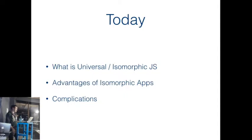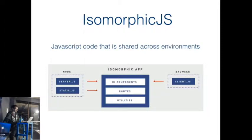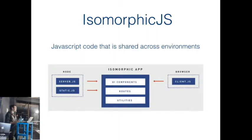I want to cover why it's relevant, some of the advantages and complications we ran into while developing isomorphic apps. I'm going to focus more on theory and things we ran into while trying to build them. So what is isomorphic or universal JS? It sounds complicated but it's not. It's just an app where you share the JS between the client and the server, or parts of the app run on both. It's not limited to just the view layer - it could be anything. We've used stuff like PouchDB where you get a single API for database access, or model validation on both sides.